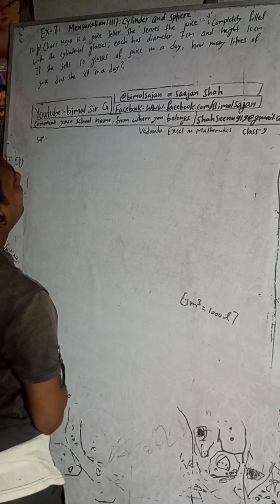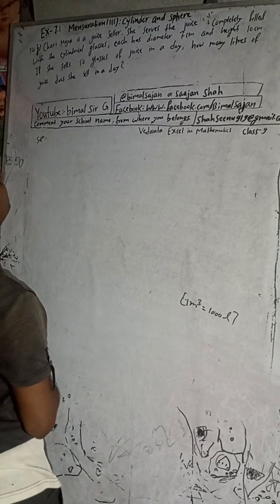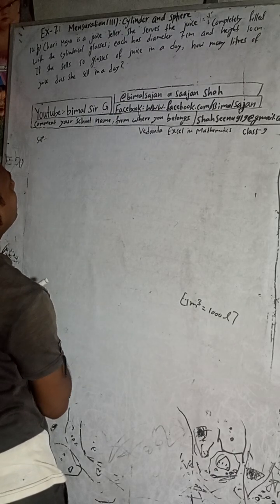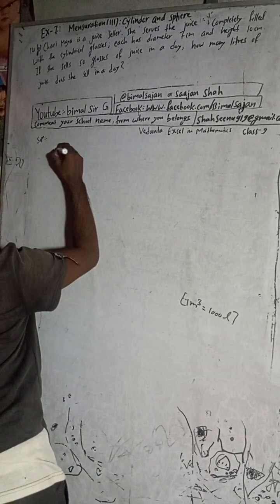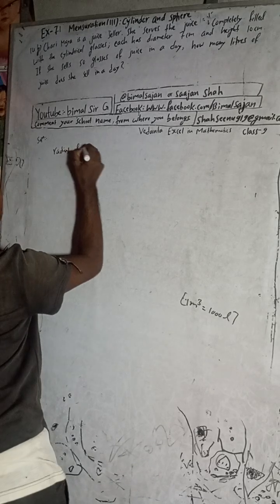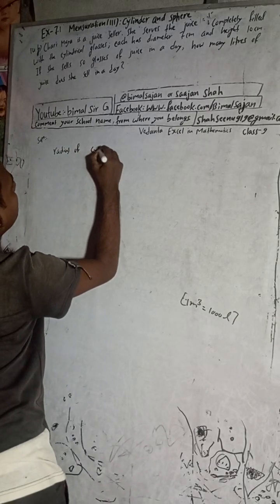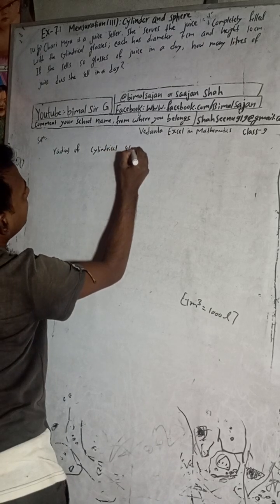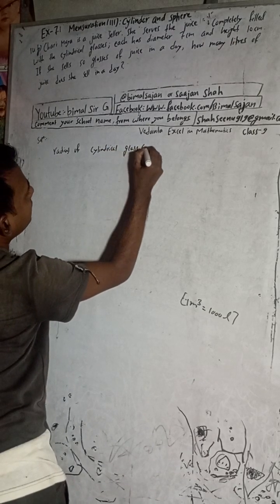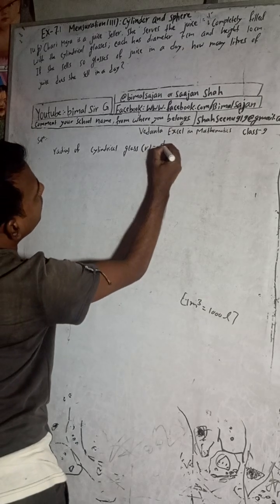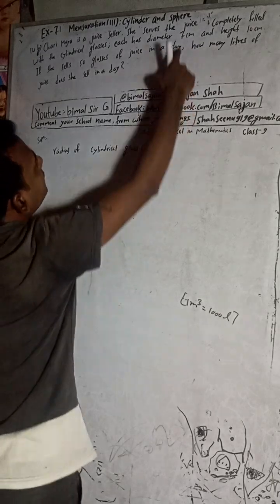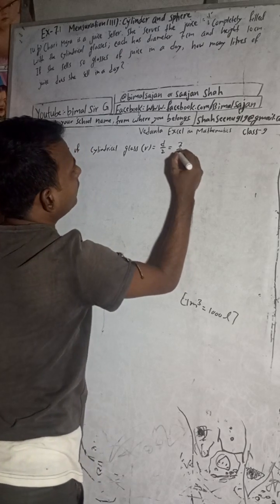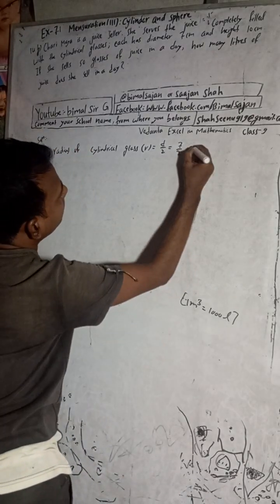Here is given: the glass is cylindrical. So diameter is given. Radius of cylindrical glass R is equal to D by 2, and the diameter is given as 7, so radius equals 7 by 2 cm.